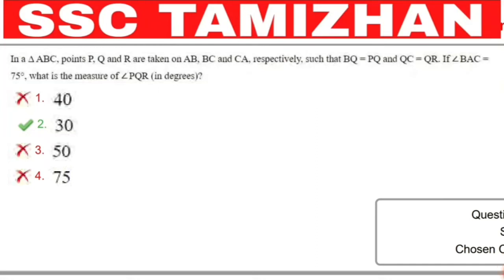In triangle ABC, points P, Q, and R are taken on AB, BC, and CA respectively, such that BQ is equal to PQ and QC is equal to QR. If angle PAC is equal to 75 degrees, what is the measure of angle PQR?